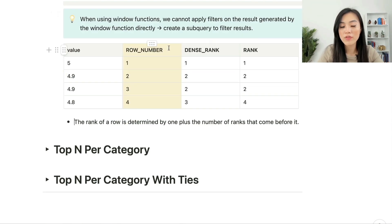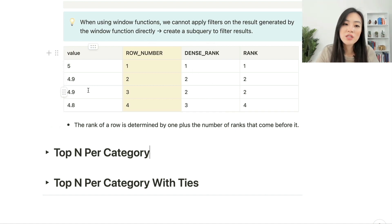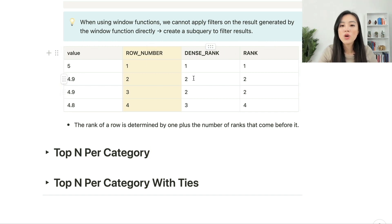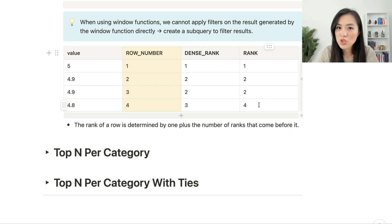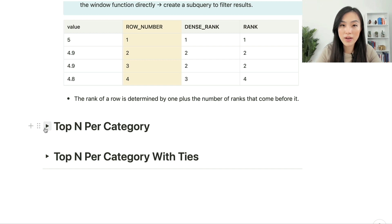Let's see why we use ROW_NUMBER instead of other ranking functions like DENSE_RANK or RANK. If we use ROW_NUMBER, we get sequential numbers from 1 to 4 — even if two rows have the same value, they are assigned different row numbers. DENSE_RANK also returns sequential numbers, but if two rows have the same value (e.g., 4.9), they get the same dense rank. The RANK function similarly assigns the same rank to tied rows, but does not return sequential numbers — there may be gaps. The rank of a row is determined by 1 plus the number of ranks that come before it, so a row with value 4.8 could have rank 4 if three elements precede it.